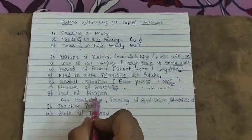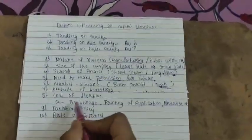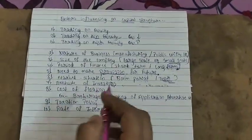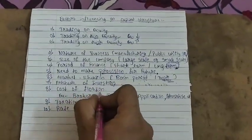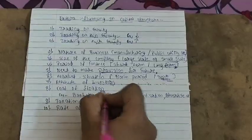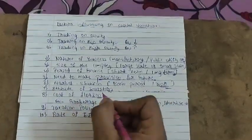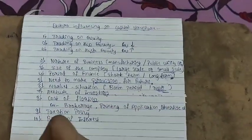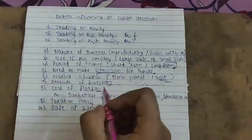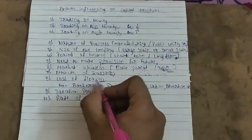The attitude of the investor is helpful for deciding the capital structure. If investors are risk takers they will prefer equity. Investors who want safety of their funds will choose debentures as well as preference shares. The next important factor is cost of flotation, which is nothing but issuing cost.